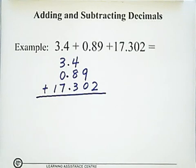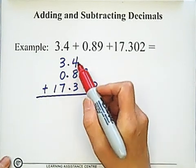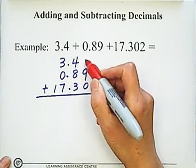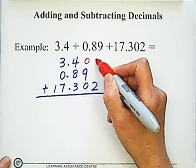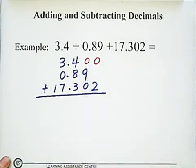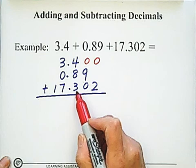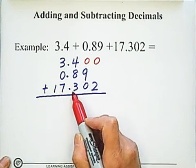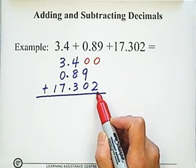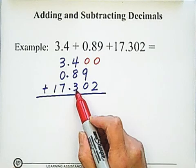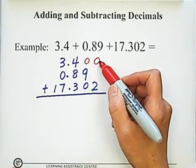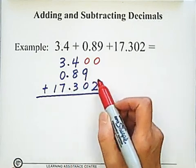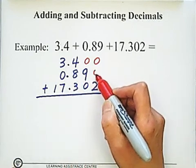We need to add zeros at the end of the numbers. For 3.4, there are no digits after the tenths place, so we put 0 here and 0 here. Because we have 17.302 with 3 digits after the decimal, we need to add two zeros for the first number. For the second number, we need to add one zero.